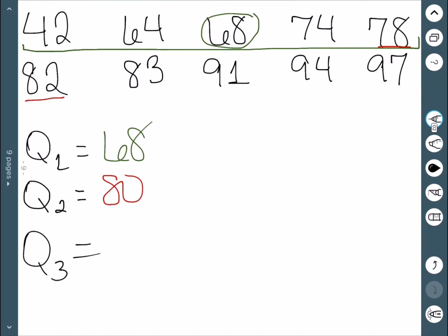For our last one, Q3, now we're only going to consider the data values above the median, all of these five. The middle would be 91.